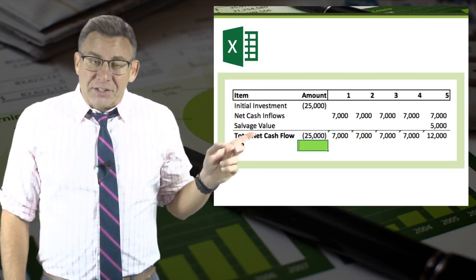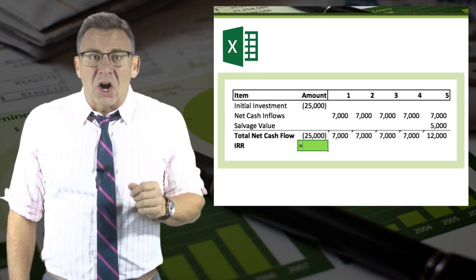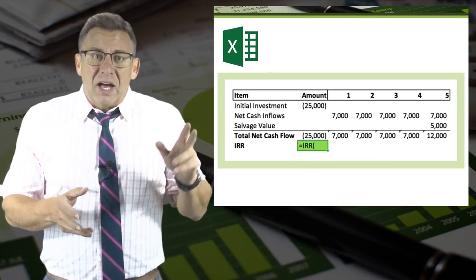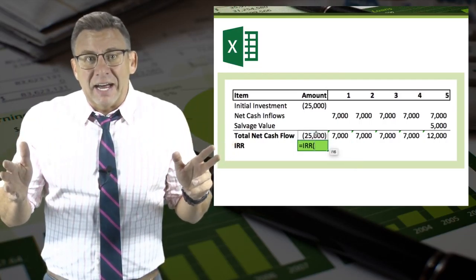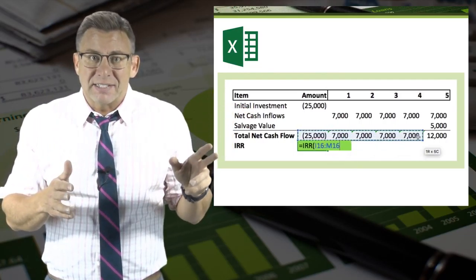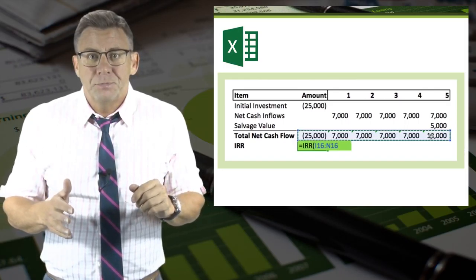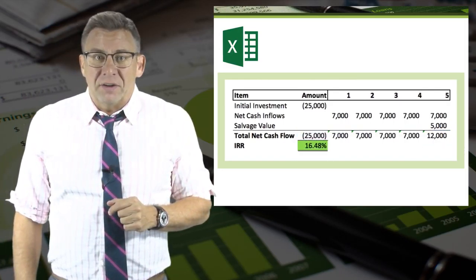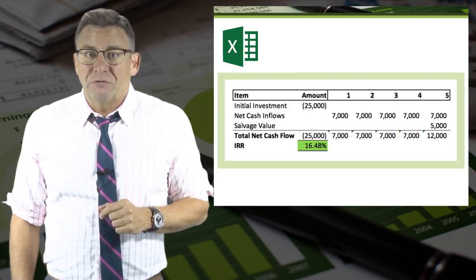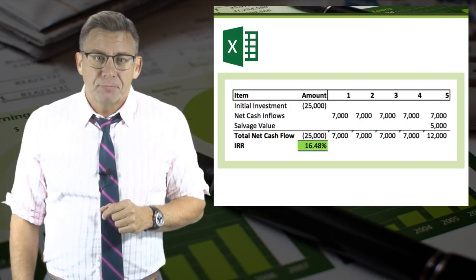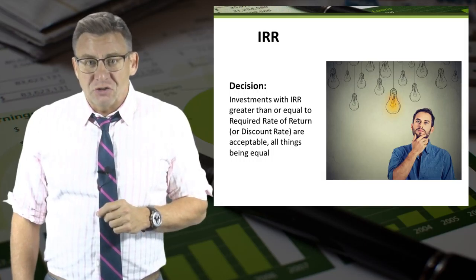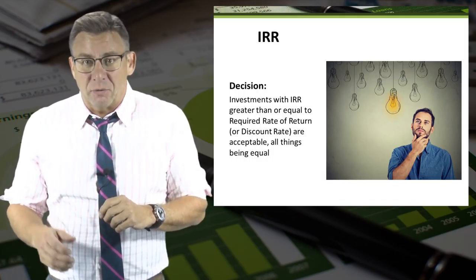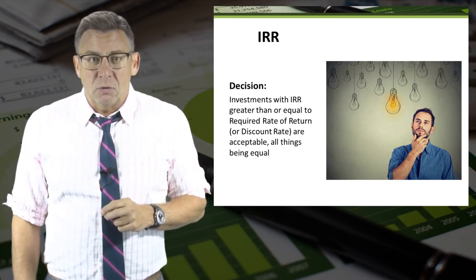I enter equals IRR, open parentheses, and then highlight the entire range of cash flows, which is I16 to M16, and that gives me an IRR of 16.48%. Our investment decision: investments with IRRs greater than or equal to the discount rate are acceptable, all things being equal.